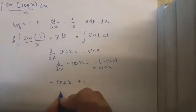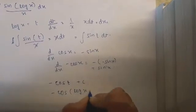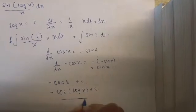So the final answer here is minus cos t plus c. Replacing the t, I get minus cos log x plus c. And that's the final answer.